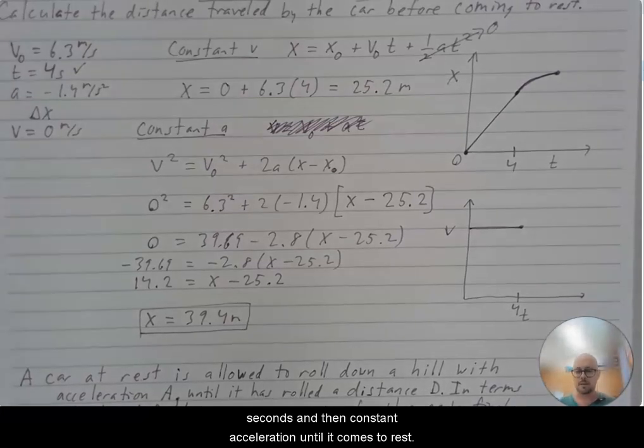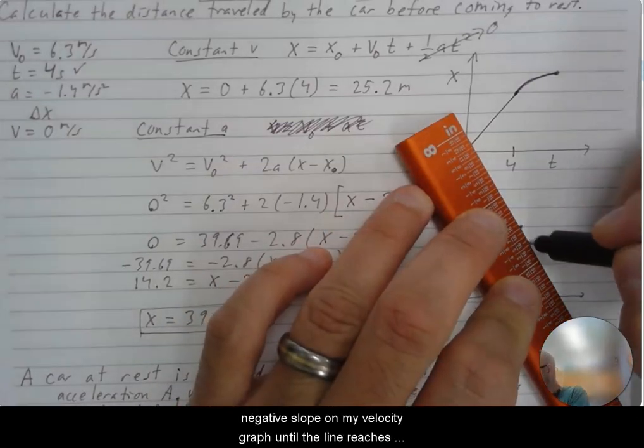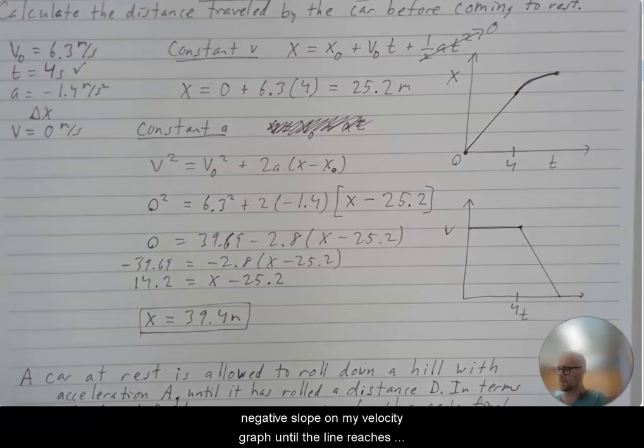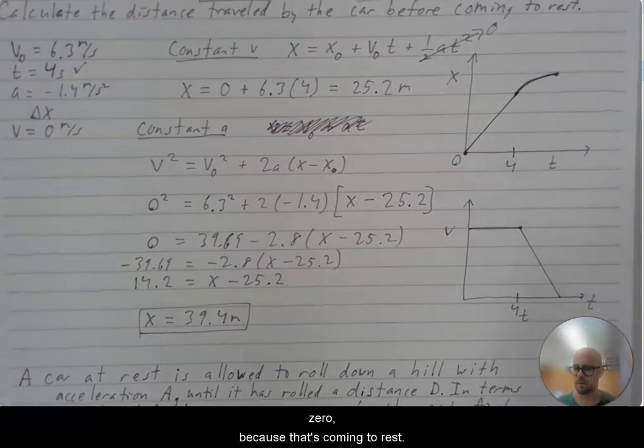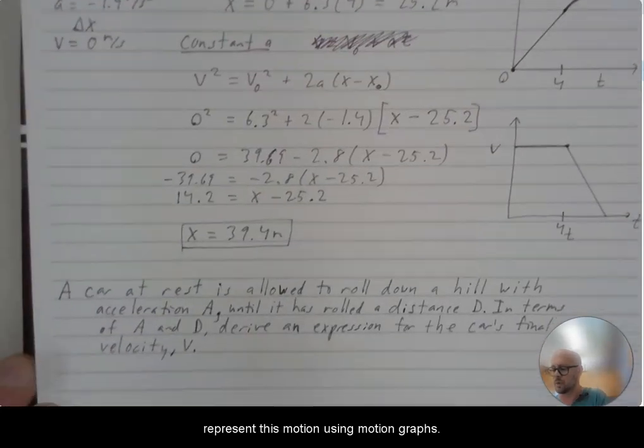And then constant acceleration until it comes to rest. Well, I'm just going to now have a negative slope on my velocity graph until the line reaches zero because that's coming to rest. So I just quickly wanted to show how you could represent this motion using motion graphs.